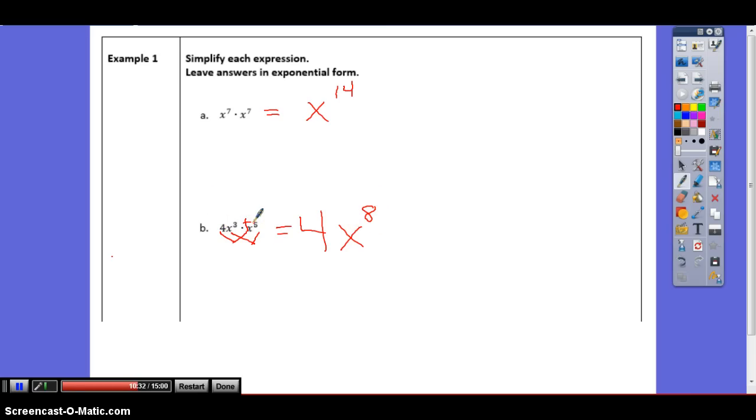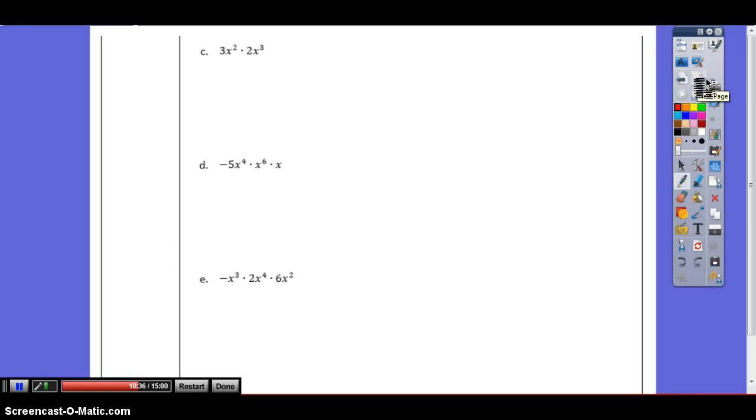How do I get for c? 6x to the 5th power. We add them, we don't multiply them. How about d? Make sure you're getting these written in your notes. Negative 5x to the 11th. Because a negative 5 times 1 is still negative 5. Negative 5 times another 1 is still a negative 5. So we have negative 5x to the 11th. Because 4, 6, and don't forget that 1 to the 11th power. And e. Hold up your answer on your whiteboards. A negative 1 times 2 is a negative 2 times 6 would be a negative 12, x to the 3 plus 4 plus 2 is 9th power.